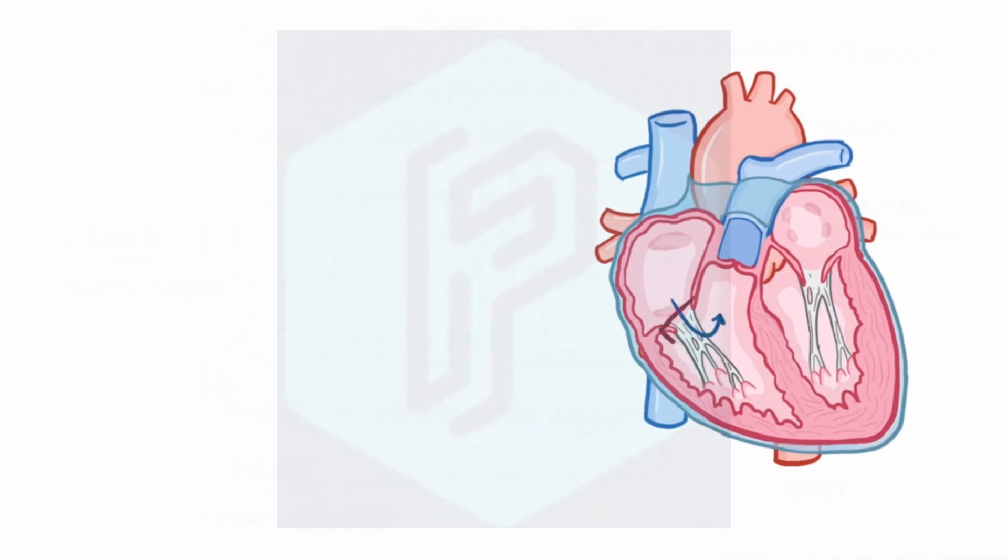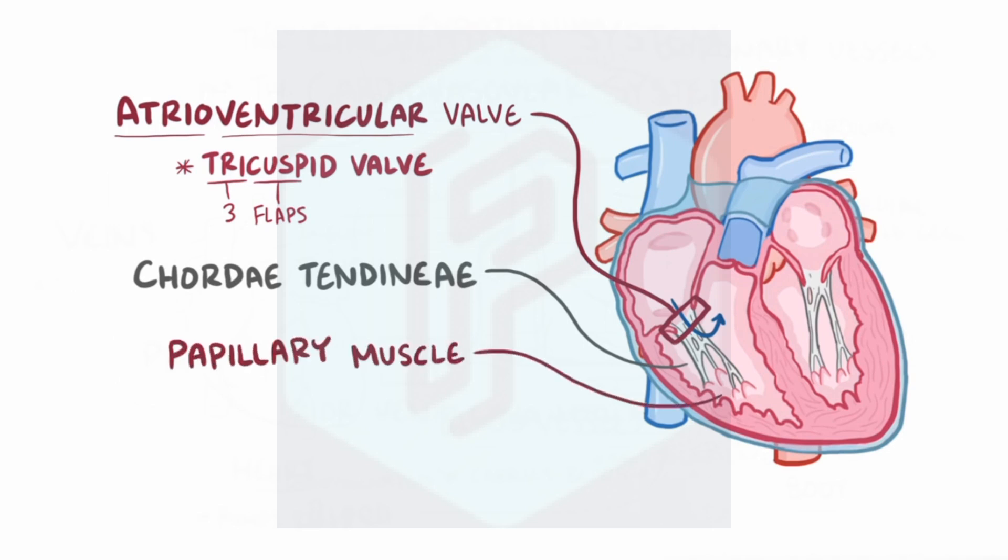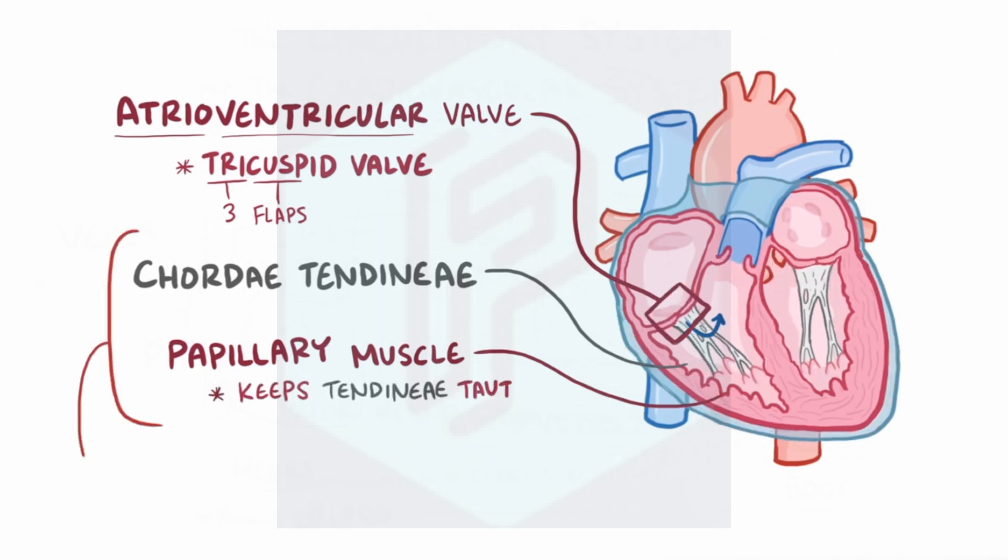Now, all that blood then goes through the first of two atrioventricular valves that separate the atria from the ventricles. This one's called the tricuspid valve, and it allows blood into the right ventricle. The tricuspid valve has three little flaps or cusps, and each cusp looks kind of like a parachute because it has tiny little strings called chordae tendinae coming off of it that tether the cusp to a small muscle called the papillary muscle. When the heart contracts, that papillary muscle keeps the chordae tendinae taut, and both of these help to prevent regurgitation of blood back into the atrium, allowing it to only flow out the next valve.